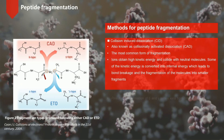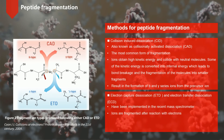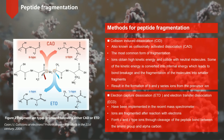This method results in the formation of B and Y series ions from the precursor ion. Electron capture dissociation and electron transfer dissociation have been implemented in recent mass spectrometers. In these methods, ions are fragmented after reaction with electrons. After fragmentation, it forms C and Z-type ions through cleavage of the peptide bond between the amino group and alpha carbon.